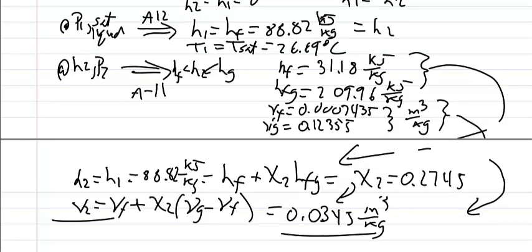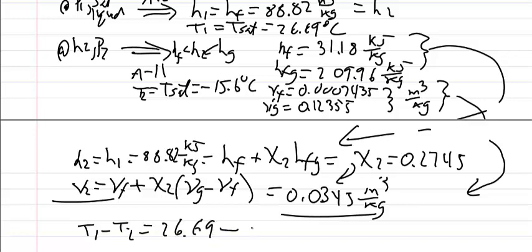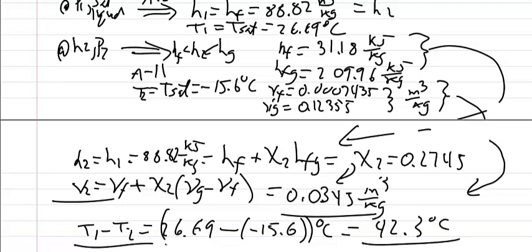I guess there's really one last step. We have yet to find the change in temperature. Up above, when I found that other data at state point 2, I should have also indicated that the temperature at point 2 is the saturation temperature. Again, it's a two-phase mixture, so the temperature is saturation temperature, and this is minus 15.6 degrees Celsius. So now we can find the temperature difference. T1 minus T2 is just going to equal 26.69, temperature at point 1, minus T2, which is a negative 15.6. These are both in Celsius, and that gives me the total temperature drop of 42.3 degrees Celsius. And now the problem is really solved.